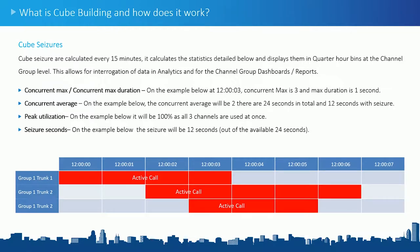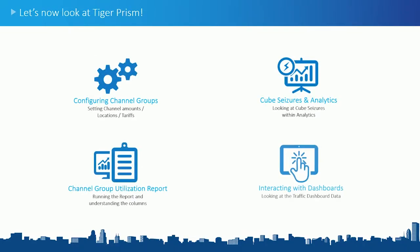These calculations are done in batches every 15 minutes. Every 15 minutes it calculates all your groups, fills in a grid, and we can then calculate the concurrency at maximum duration, concurrent average, peak utilization, and seizure seconds. Now let's go and look at Tiger Prism — how to configure channel groups, look at cube seizures in analytics, the channel group utilization report, and some dashboards.